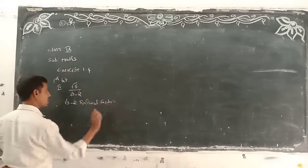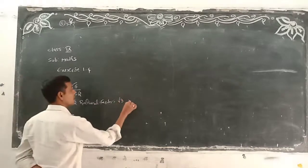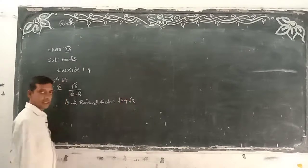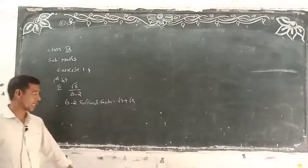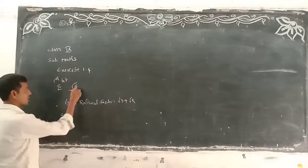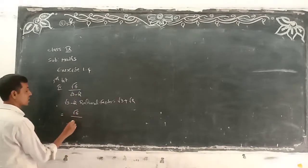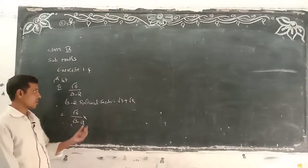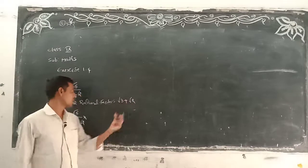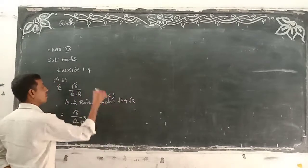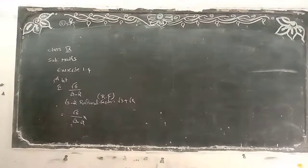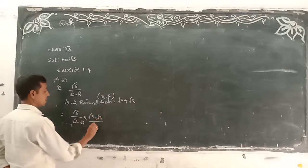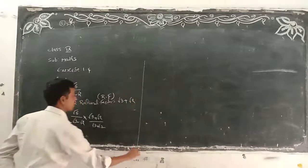The rationalizing factor (RF) equals: write down the same numbers, root 3 and root 2, but change the sign. We had minus, so we write plus — the RF is root 3 plus root 2. Multiply and divide by root 3 plus root 2.